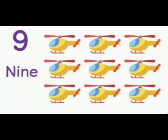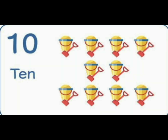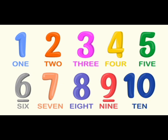9 — we have 9 aeroplanes. And 10 — we have 10. Spelling: O-N-E 1, T-W-O 2, T-H-R-E-E 3, F-O-U-R 4, F-I-V-E 5, S-I-X 6, S-E-V-E-N 7, E-I-G-H-T 8, N-I-N-E 9, T-E-N 10.